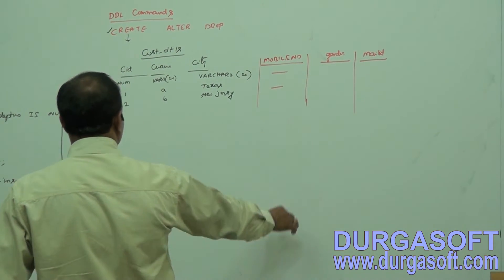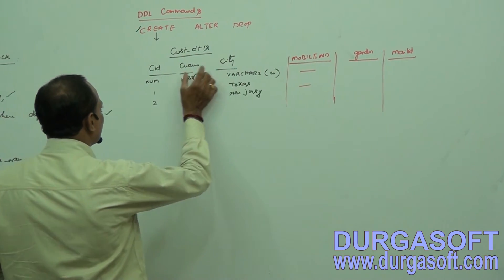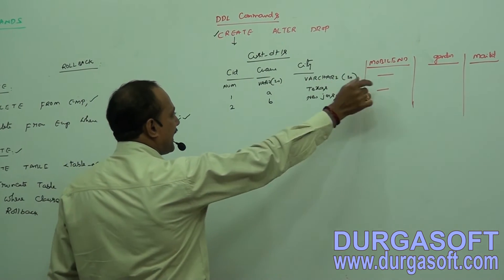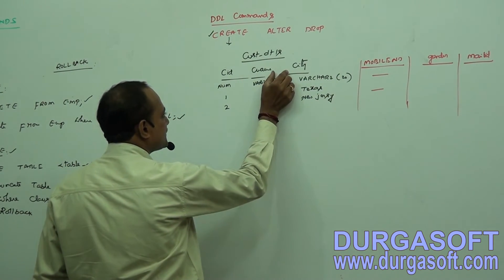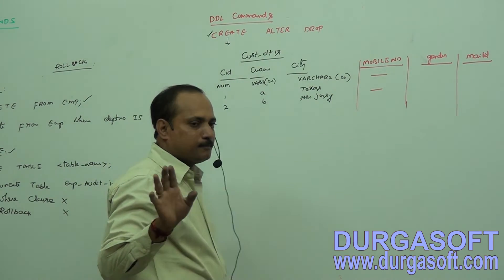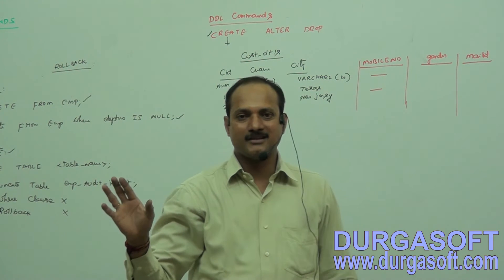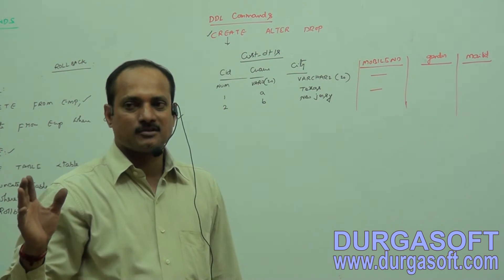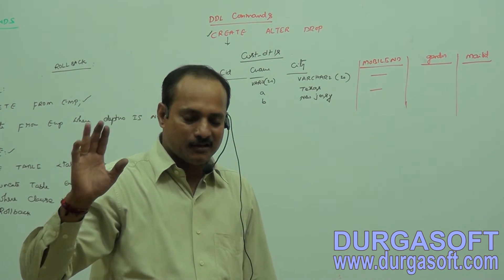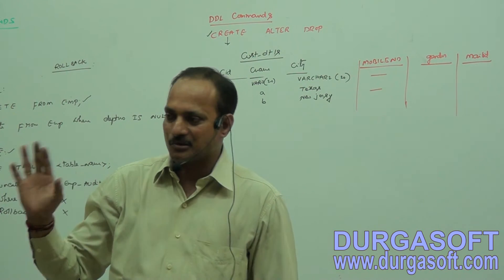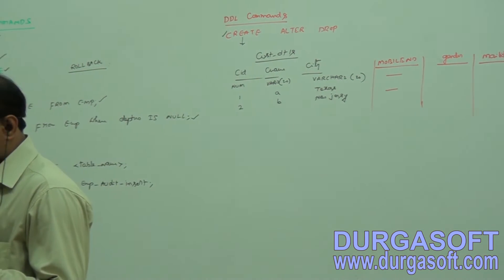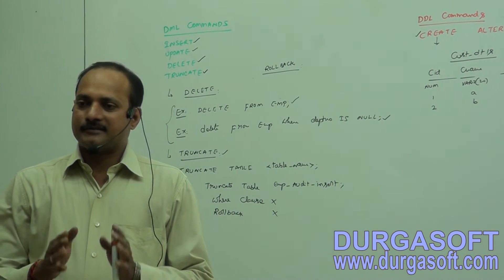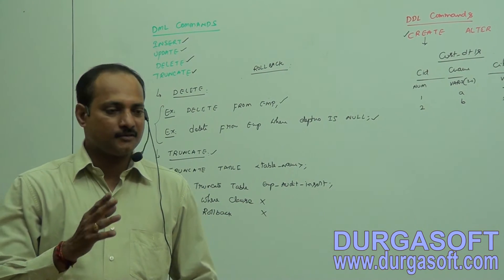When adding a column, can you add it in the middle of existing columns? For example, adding the mobile number column before the first column, or adding a gender column between customer name and city? That is impossible. Whenever you add columns, they are added at the end of the table structure only — not in the middle or at the beginning.